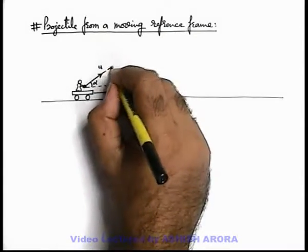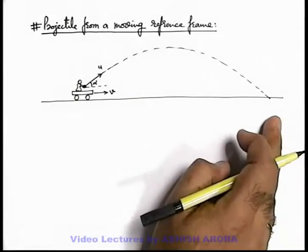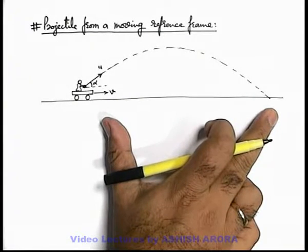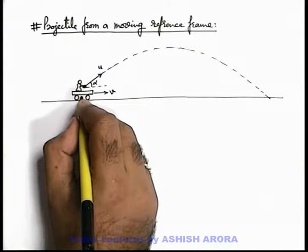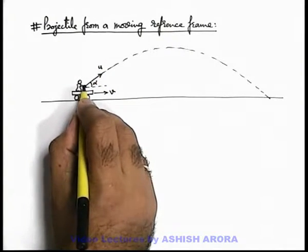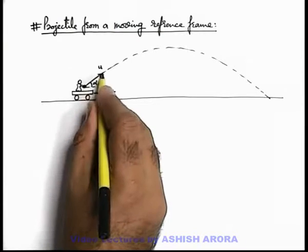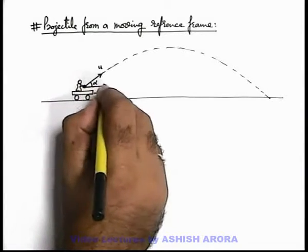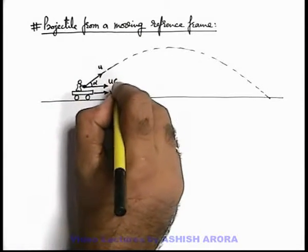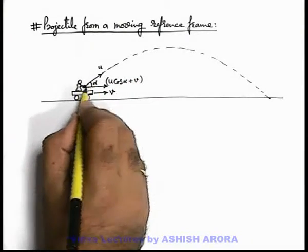We can simply state that this particle or ball will follow projectile motion, but this motion cannot be analyzed with the relations studied earlier. The speed with which the ball was thrown was relative to the cart. When the boy was holding the ball, the ball itself had velocity v as it was in the cart. So the horizontal component of the ball's velocity can be written as u cos alpha plus v, because v was already there in the ball and u cos alpha is provided by the boy.